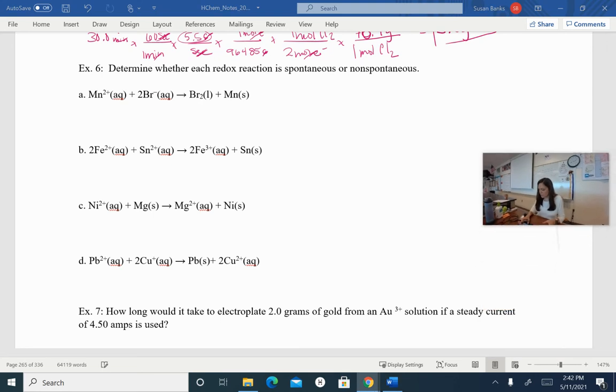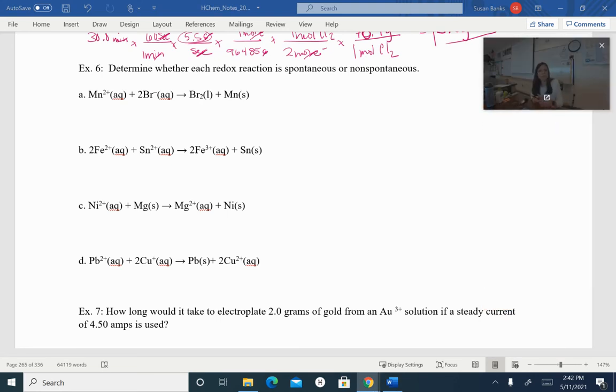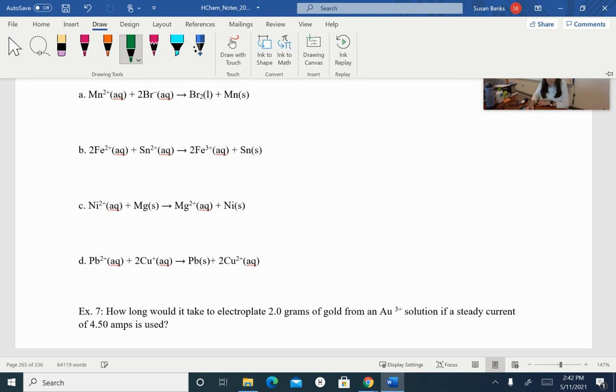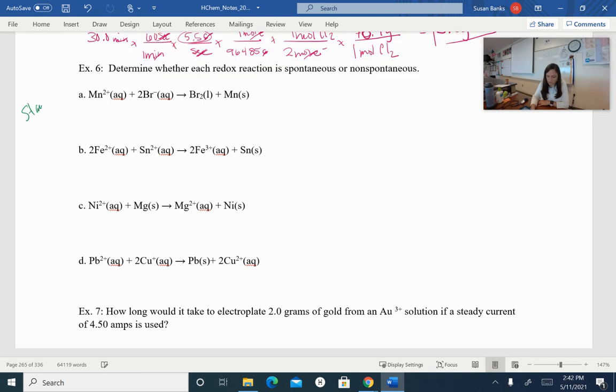All right, so this next bit for electrolysis, we are going to just determine whether these cells are going to be spontaneous or not. So when you do this, you are definitely going to need your standard reduction table. Okay, so we're going to determine whether each of these reactions are spontaneous or not.